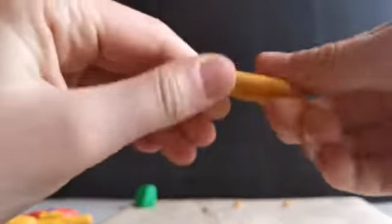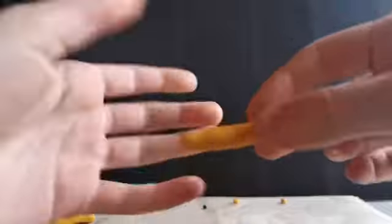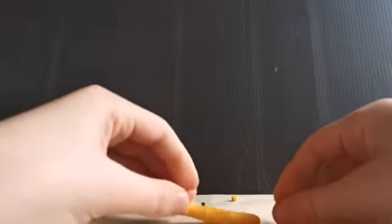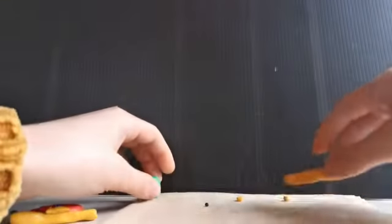So first of all we're going to start with the body. You take this and you roll it up into a nice sausage around the size of, let's say, your pinky finger.